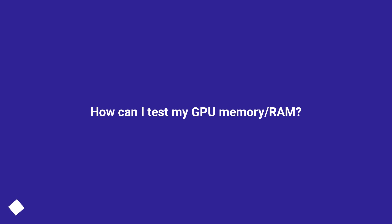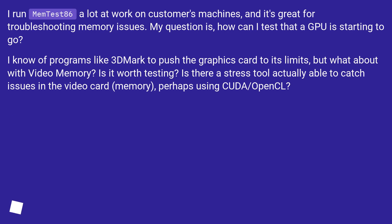How can I test my GPU memory / RAM? I run Memtest86 a lot at work on customers' machines, and it's great for troubleshooting memory issues. My question is, how can I test that a GPU is starting to go? I know of programs like FurMark to push the graphics card to its limits, but what about with video memory?